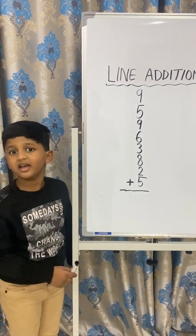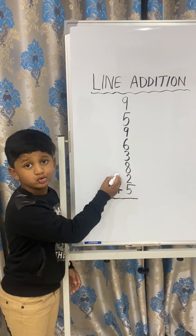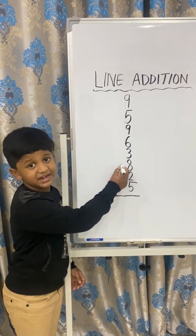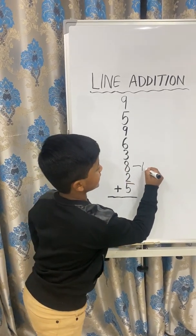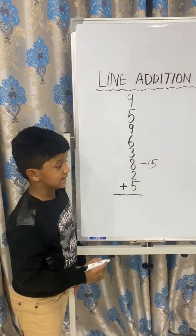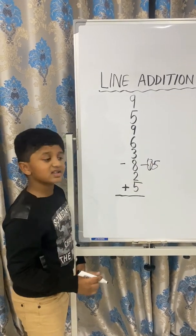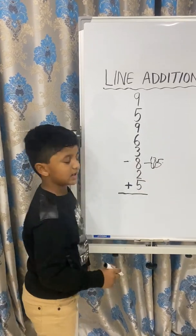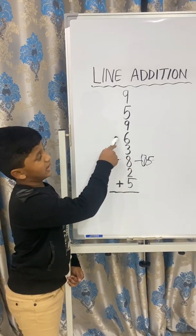As I said earlier, you should add one by one. First, we add 5 plus 2 which gives us 7. Then we add 7 plus 8 which gives us 15. We got 15, so as I said, we consider the tens place as a dash and continue with the ones place. That is, 5 plus 3 is 8. So 8 is the next number.